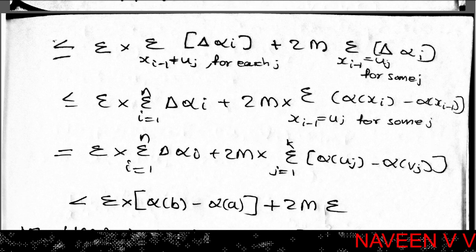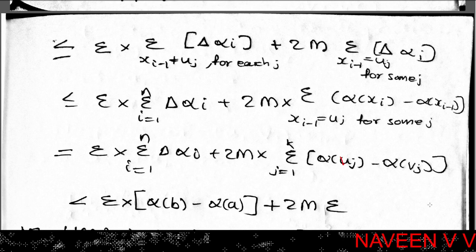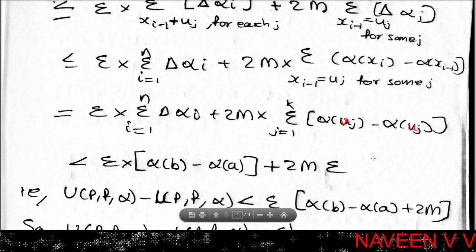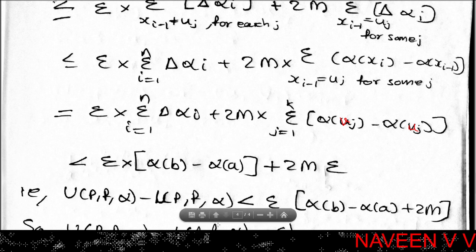Applying the bounds: replacing delta_alpha_i with (alpha(x_i) minus alpha(x_{i-1})), and using M_i minus m_i less than or equal to epsilon in the first sum, and M_i minus m_i less than or equal to 2M in the second sum. In the second sum, replace x_i with v_j and x_{i-1} with u_j. This gives: epsilon times summation i=1 to n of delta_alpha_i plus 2M times summation j=1 to k of (alpha(v_j) minus alpha(u_j)). Since summation j=1 to k of (alpha(v_j) minus alpha(u_j)) is less than epsilon and summation i=1 to n of delta_alpha_i equals alpha(b) minus alpha(a).